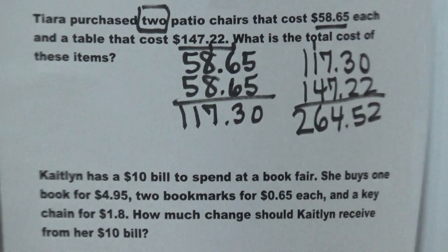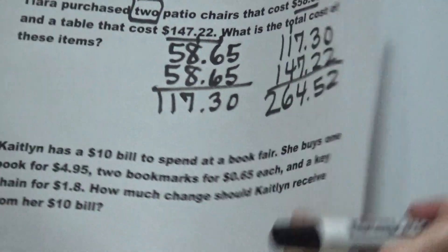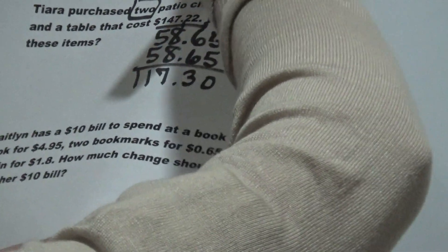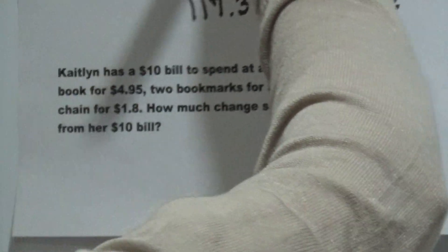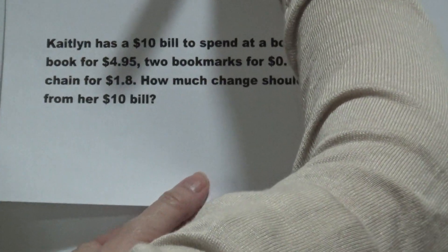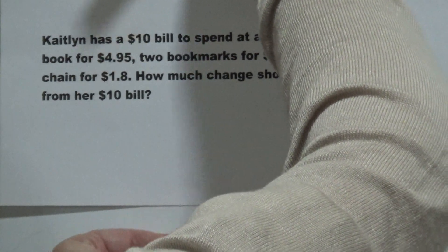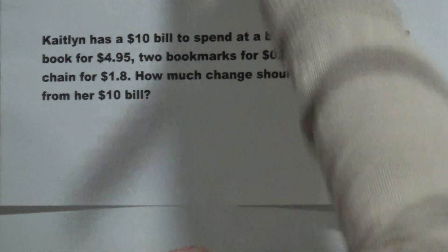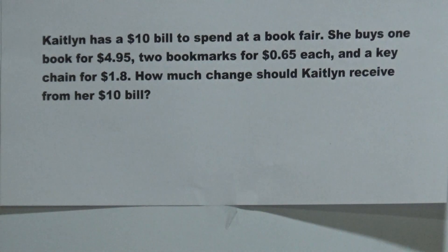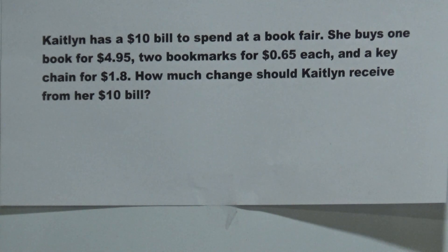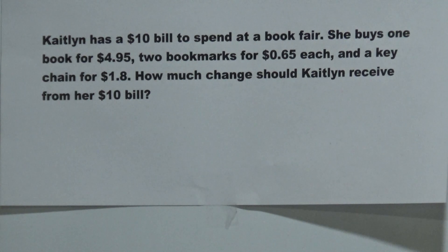Now the very next one: Caitlin has a $10 bill to spend at a book fair. She buys one book for $4.95, two bookmarks for $0.65 each, and a keychain for $1.80.